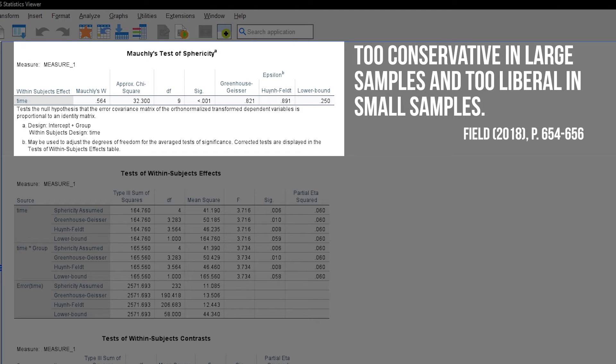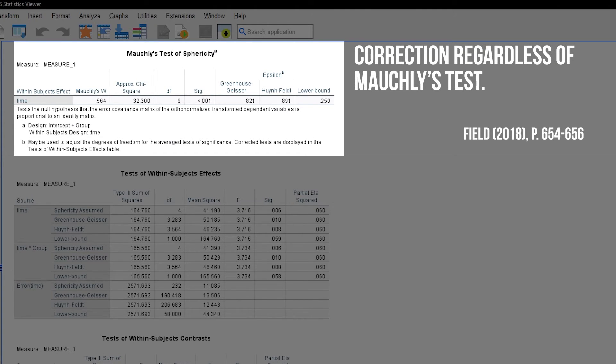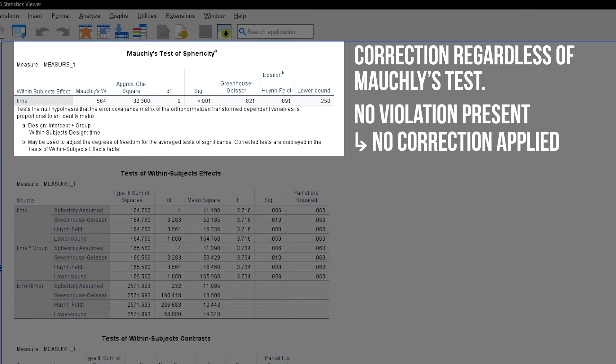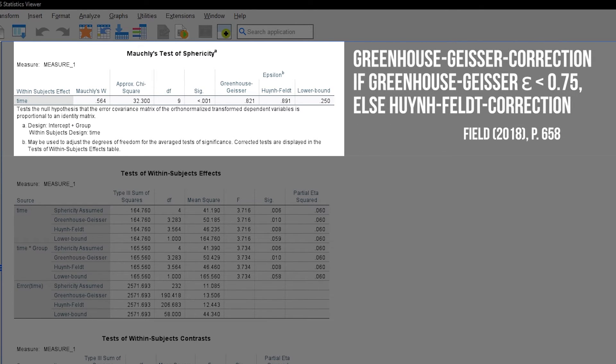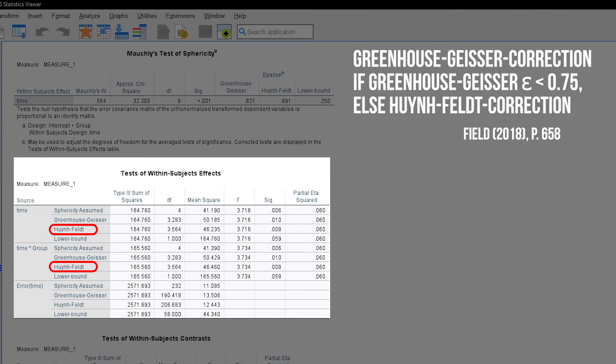Field therefore recommends ignoring the p-value and making a correction regardless of the results of the Mauchly's test. Which correction should be chosen then? According to Field page 658, Greenhouse-Geisser should be chosen if the Greenhouse-Geisser epsilon value in Mauchly's test is below 0.75. Conversely, larger than 0.75 leads to a Huynh-Feldt correction. In my example, epsilon is larger than 0.75 so I use the results in the respective HF lines.